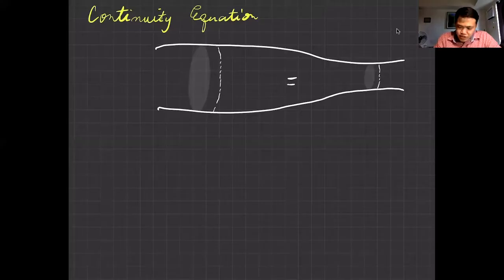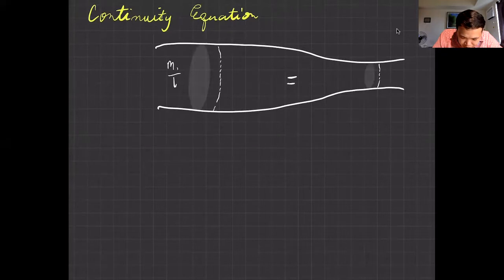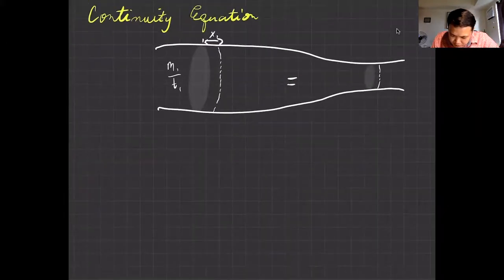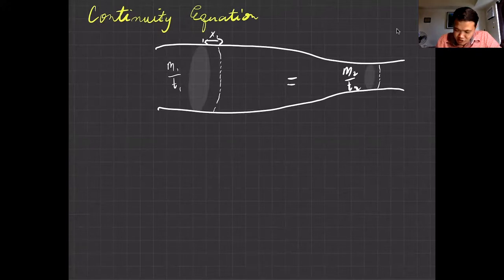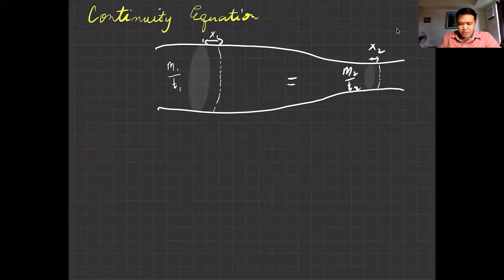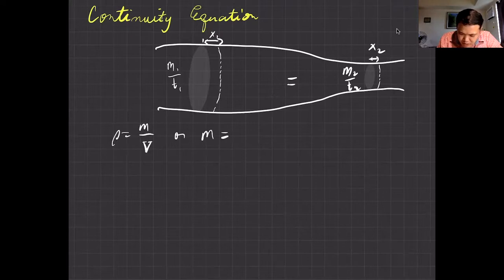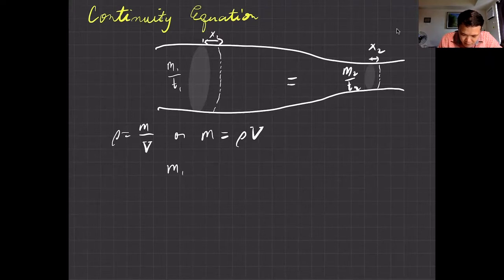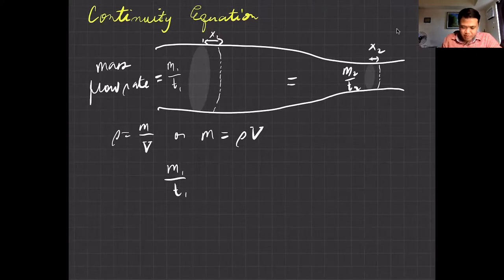Let me now express that in an equation. Here is our piping system with two points. The mass flow rate m1 per unit of time t1 is passing through at point x1, and m2 over t2 at point x2 — and they should be equal. We know that density equals mass per unit volume, so mass equals density times volume. So mass flow rate m1 over t1 should equal the mass flow rate on the other side.